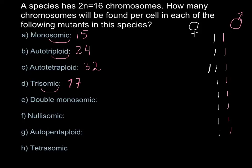Next, Question E: Double monosomic. This means one chromosome is missing from each pair — for example, I can delete one chromosome from the male side and one chromosome from the female side. What we get is 16 minus 2 = 14. So the correct answer for double monosomic is 14.